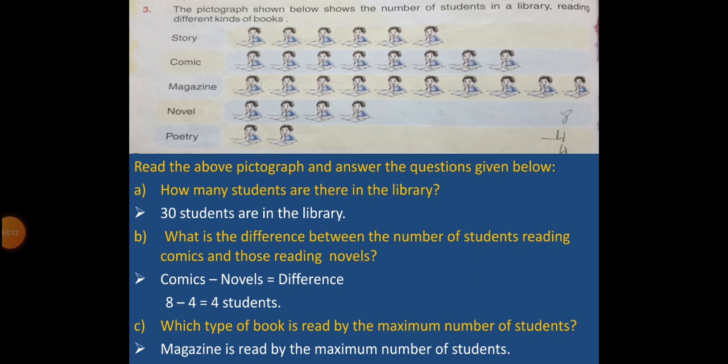Let's move to question number 3. The pictograph shown below shows the number of students in a library reading different kinds of books: story books, comics, magazine, novel and poetry. Read the above pictograph and answer the questions. Please observe the pictograph very carefully.